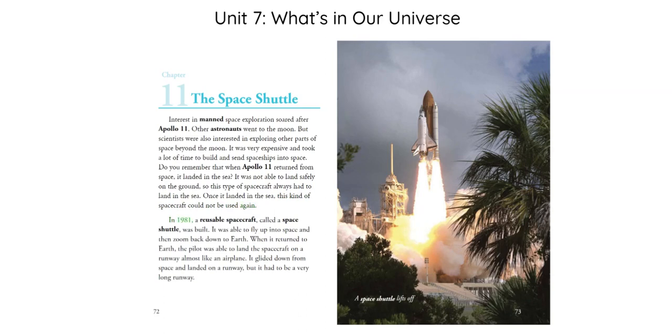In 1981, a reusable spacecraft called a Space Shuttle was built. It was able to fly up into space and then zoom back down to Earth. When it returned to Earth, the pilot was able to land the spacecraft on a runway, almost like an airplane. It glided down from space and landed on a runway, but it had to be a very long runway.